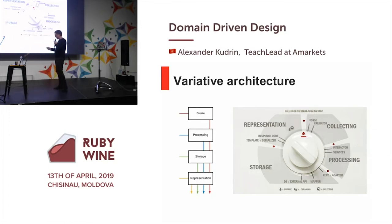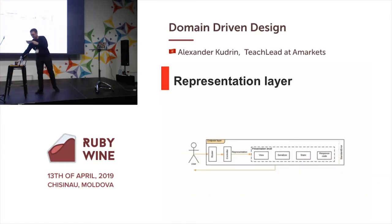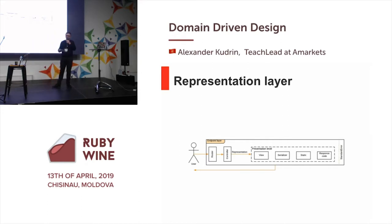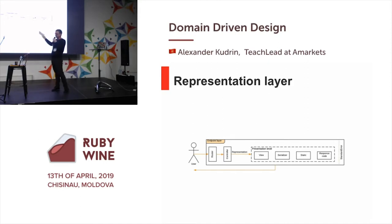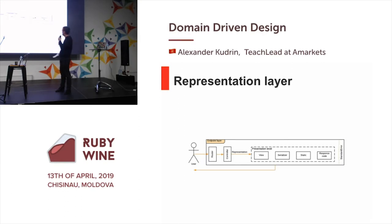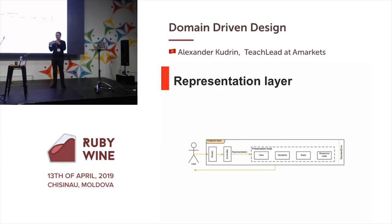Let's use our architecture implementation step by step. The first layer is the representation layer. The main responsibility of this layer is to represent data in the expected format. If you want to show an HTML page, you use a view pattern. If you want to show data for another microservice in JSON or XML format, you use a serializer. Or you can get only a response code — for example, if you write a health checker, you can get response code 200, meaning all OK.